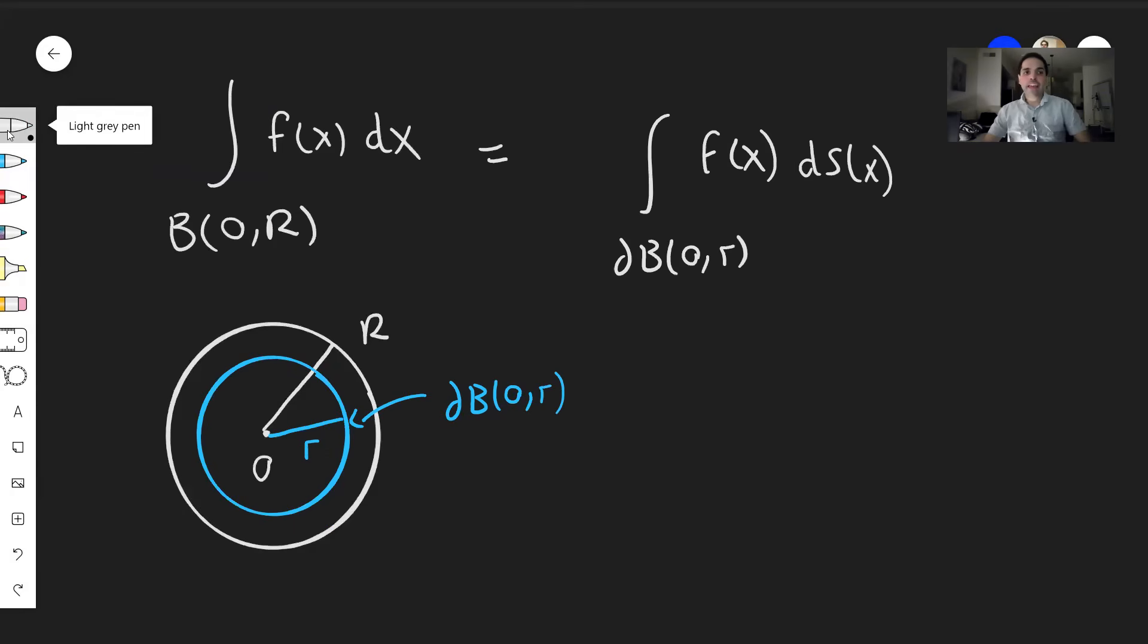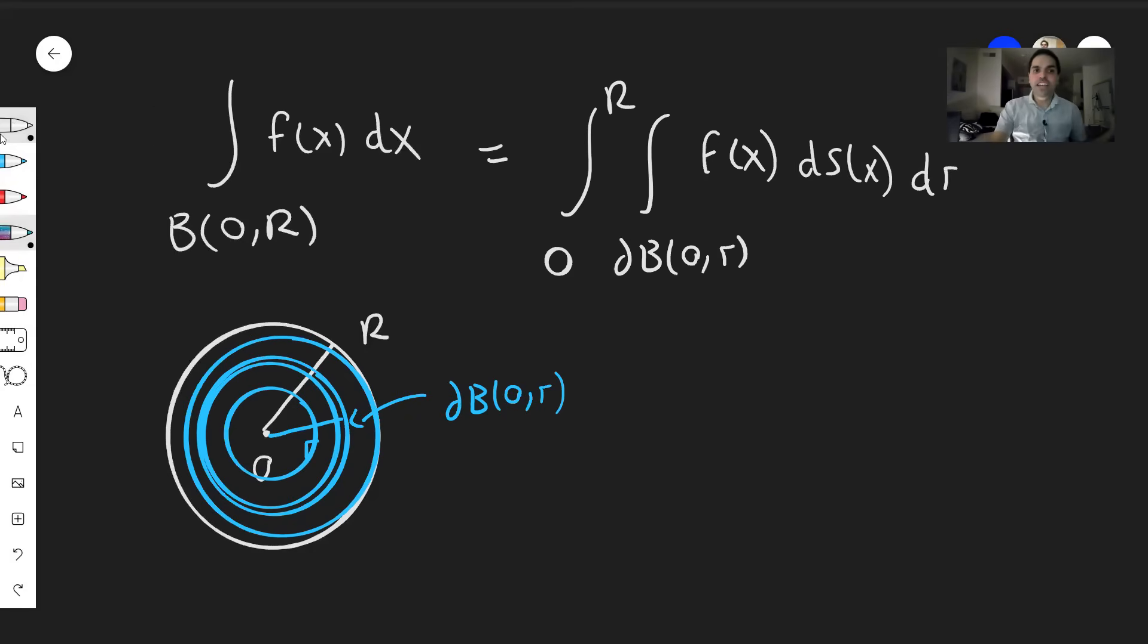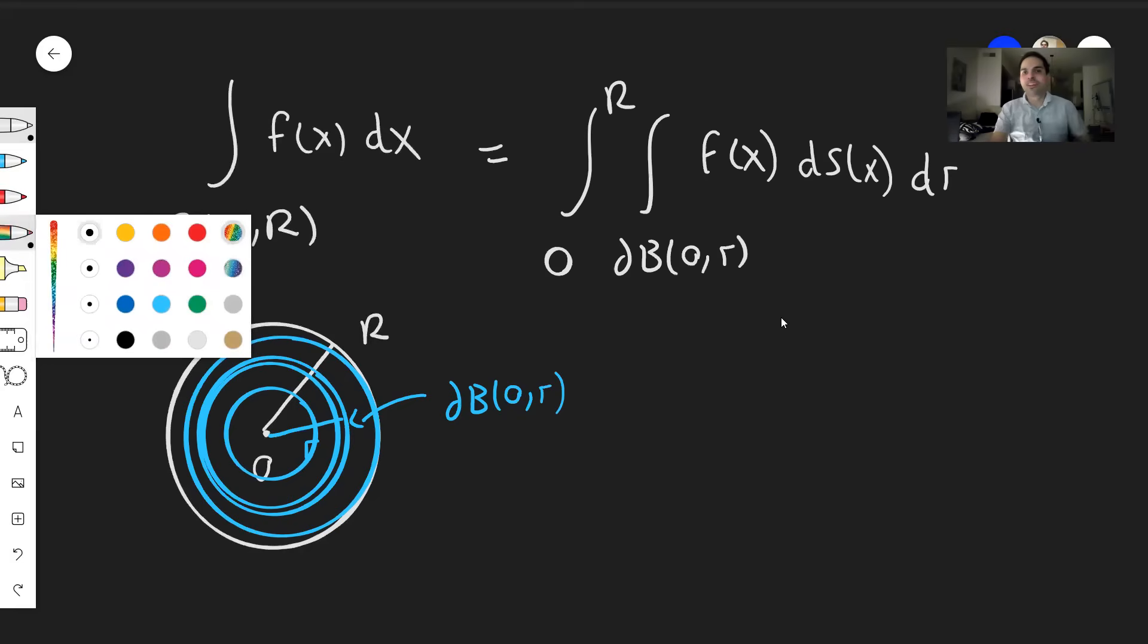And then all you do, you just add up those little circles. Just like an onion. And adding up just means integrating. So you take whatever answer you have here and you integrate little r from zero to capital R. And this, ladies and gentlemen, is the polar coordinates formula.